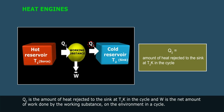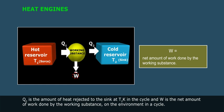Q2 is the amount of heat rejected to the sink at T2 K in the cycle, and W is the net amount of work done by the working substance on the environment in a cycle.